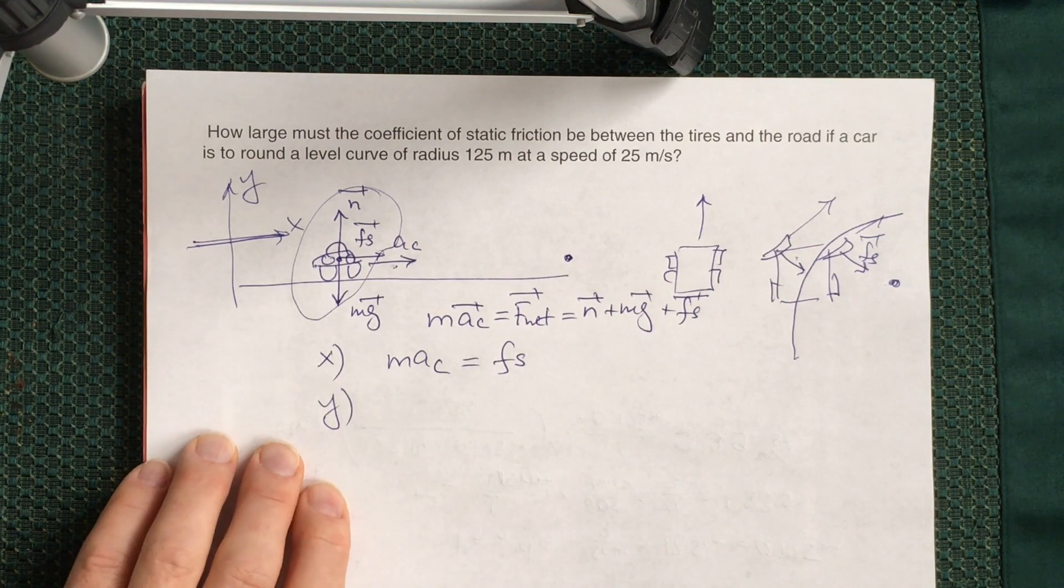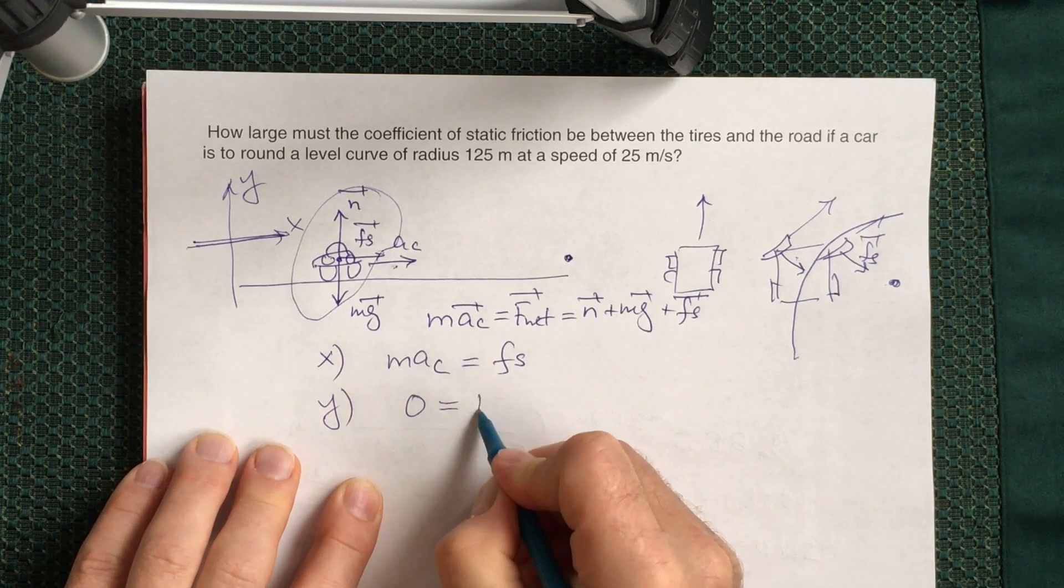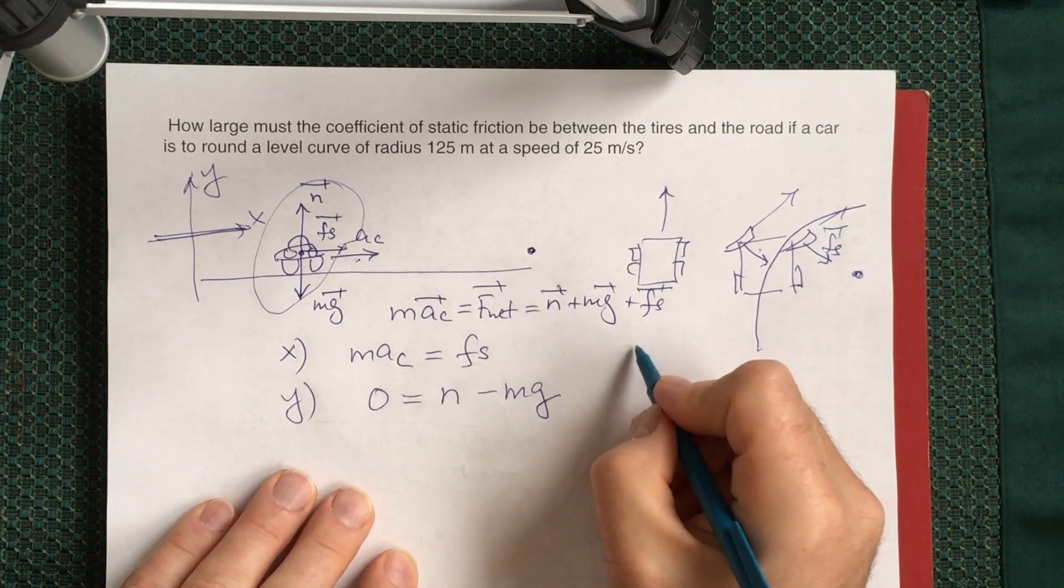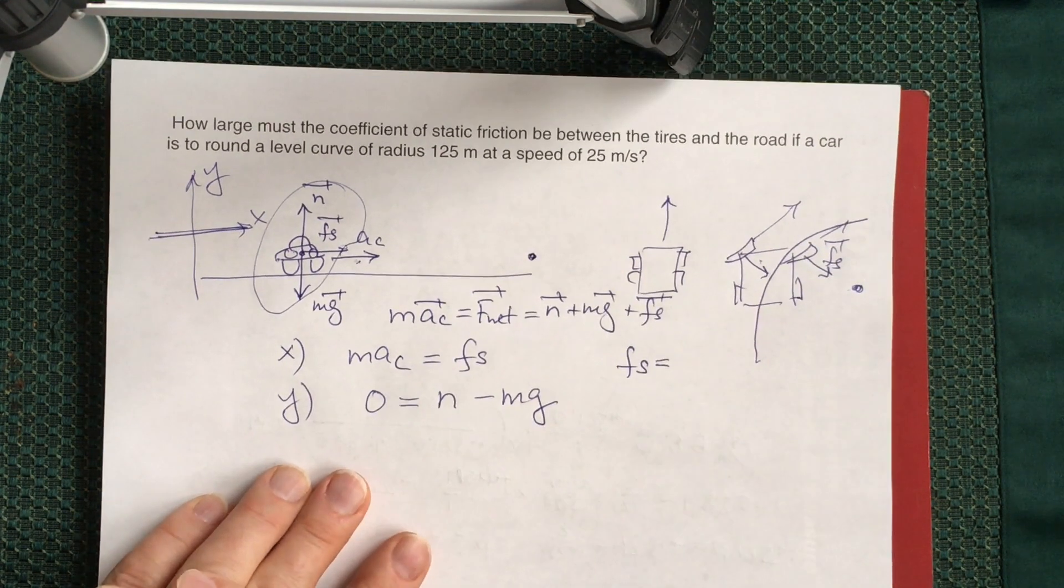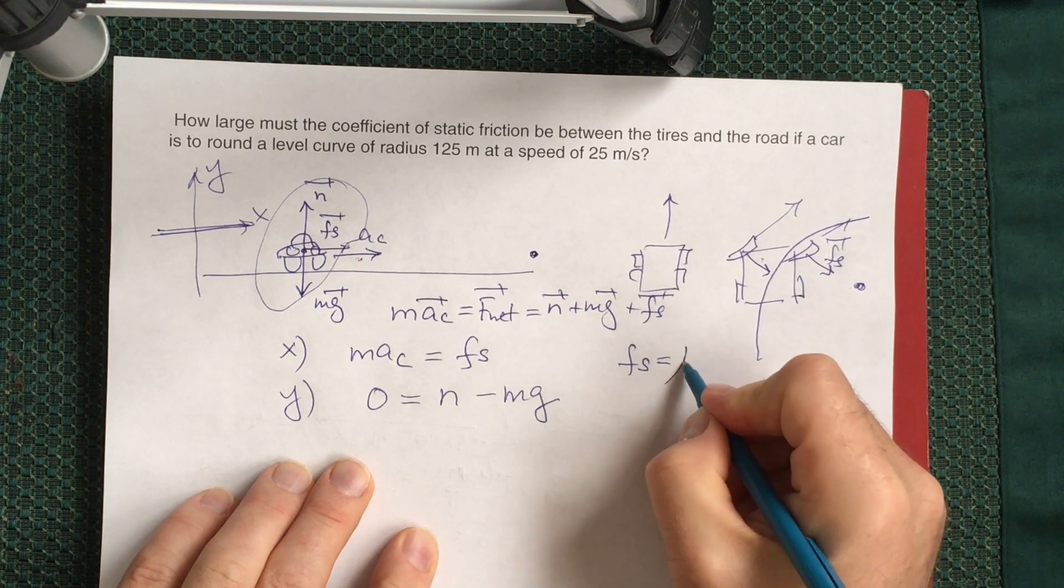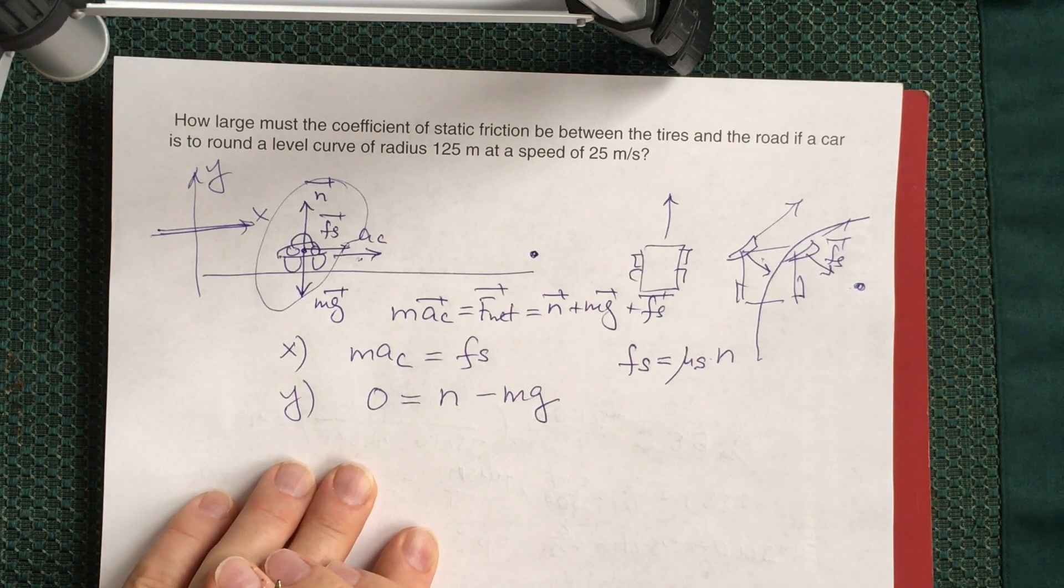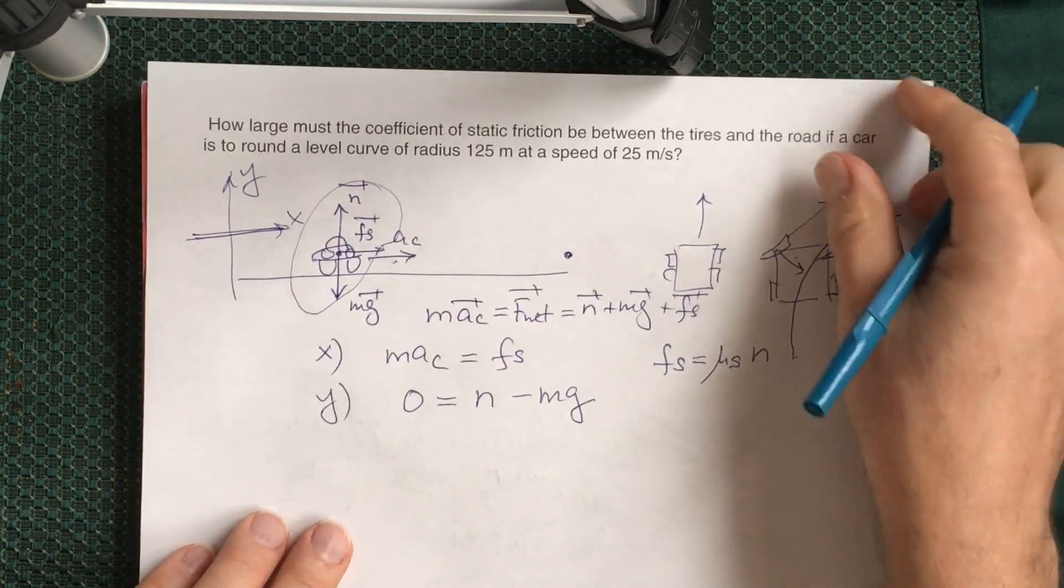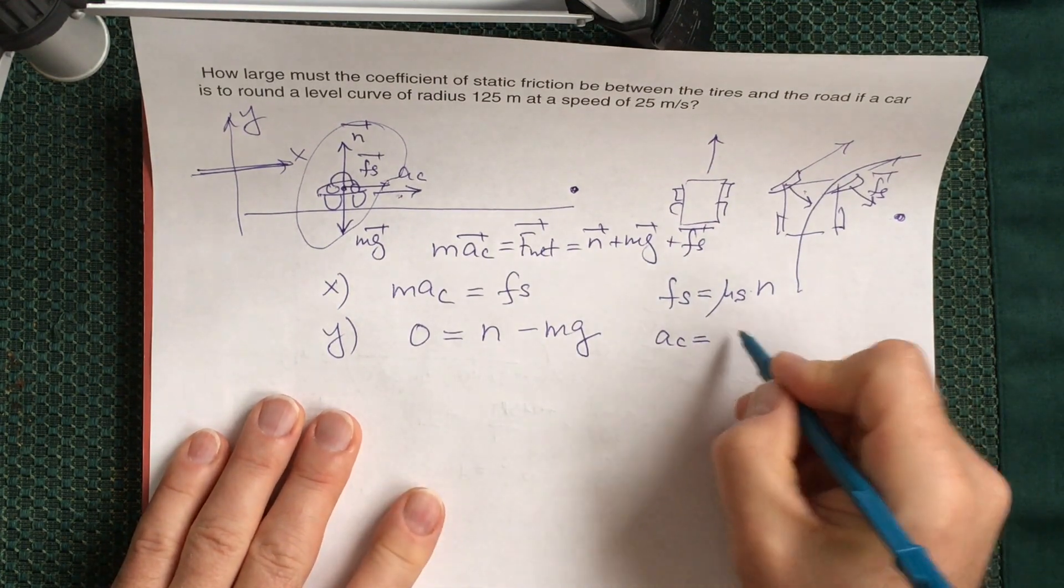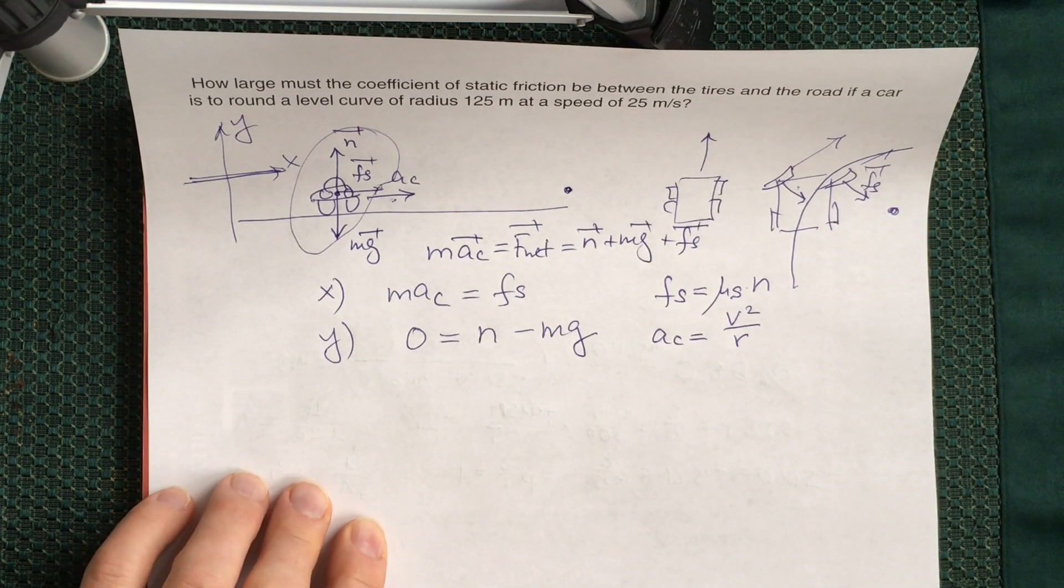For the y-axis you do not have any acceleration at all. So centripetal acceleration is zero times mass gives you zero. You have positive N and negative mg. And as usual whenever you deal with friction you have to add an equation which connects the value of the friction force with the value of the normal force. So static friction force is coefficient of static friction times magnitude of the normal force. Then we have to combine all of these three equations plus we have to use the definition of centripetal acceleration. A_centripetal is v squared divided by R, radius of the road.